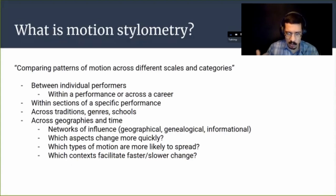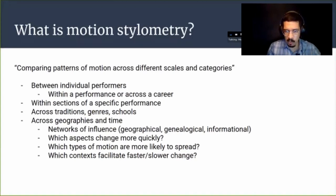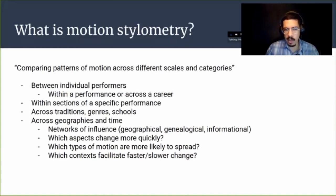The dream for motion stylometry is to at some point be able to trace networks of influence — geographical, genealogical, or informational. For example, in Southeast Asia, where I'm based, but also elsewhere in Asia, there are very important movement traditions of dance and physical theater, theater with objects, masks, puppets, and other kinds of performing objects that share similarities with their neighbors. This is almost akin to contact linguistics, where you can see how certain features of language move across neighboring regions. That's true for dance as well, although it hasn't really been tracked with large-scale datasets and an empirical perspective.